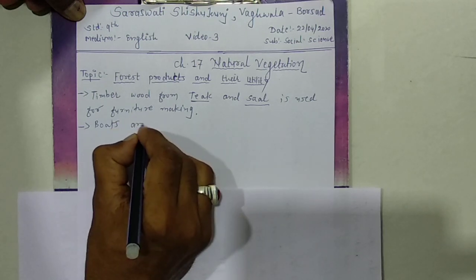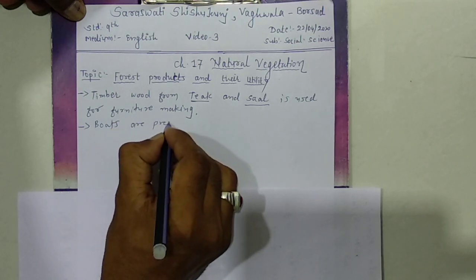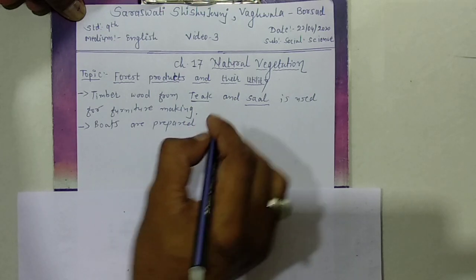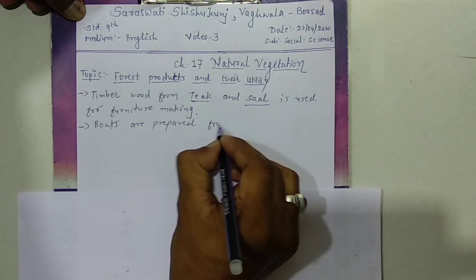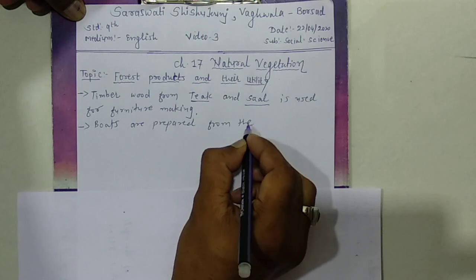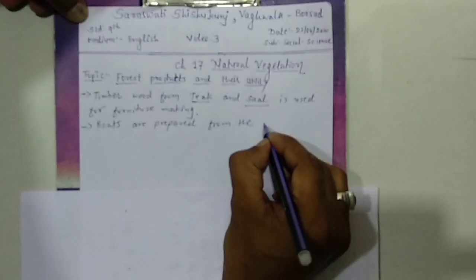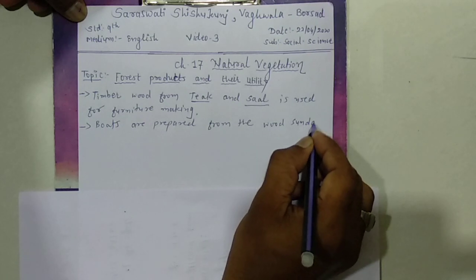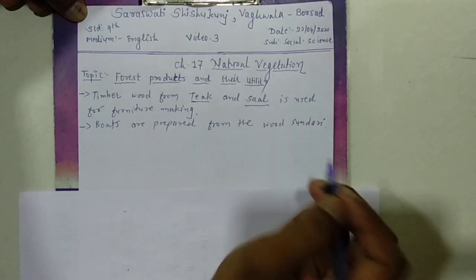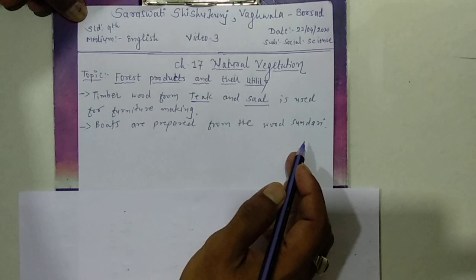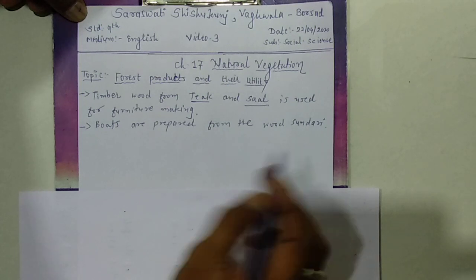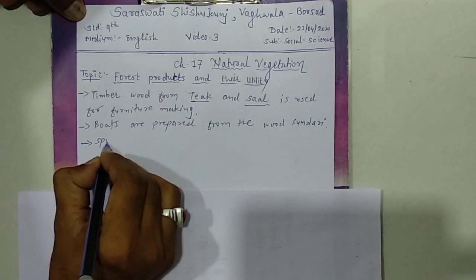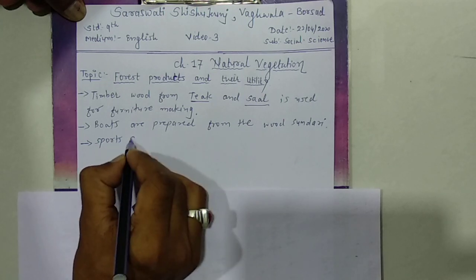The second one is boats. Boats are prepared from the wood of sundari trees, which are found in the Sundarbans delta. The next category is sports goods.